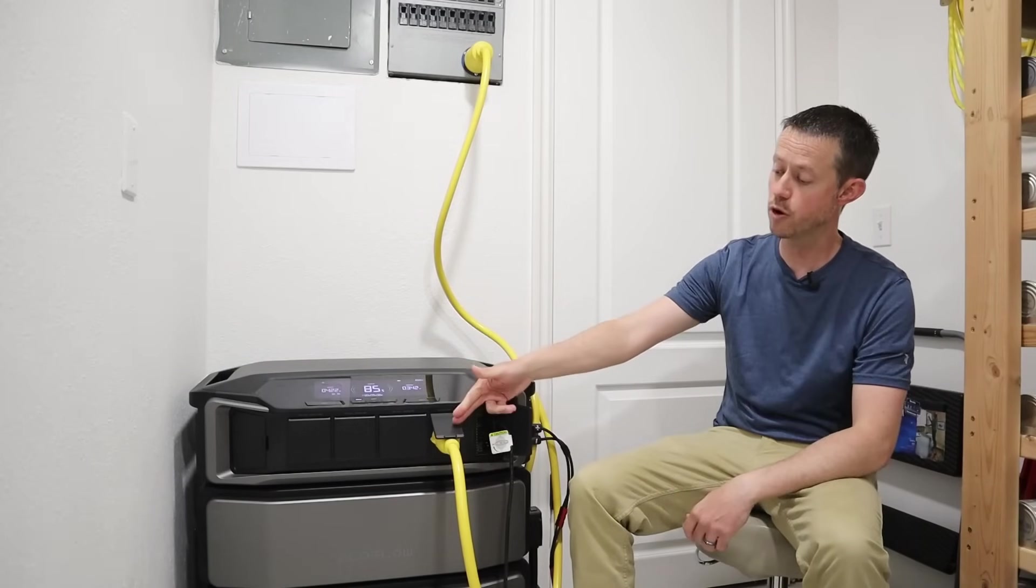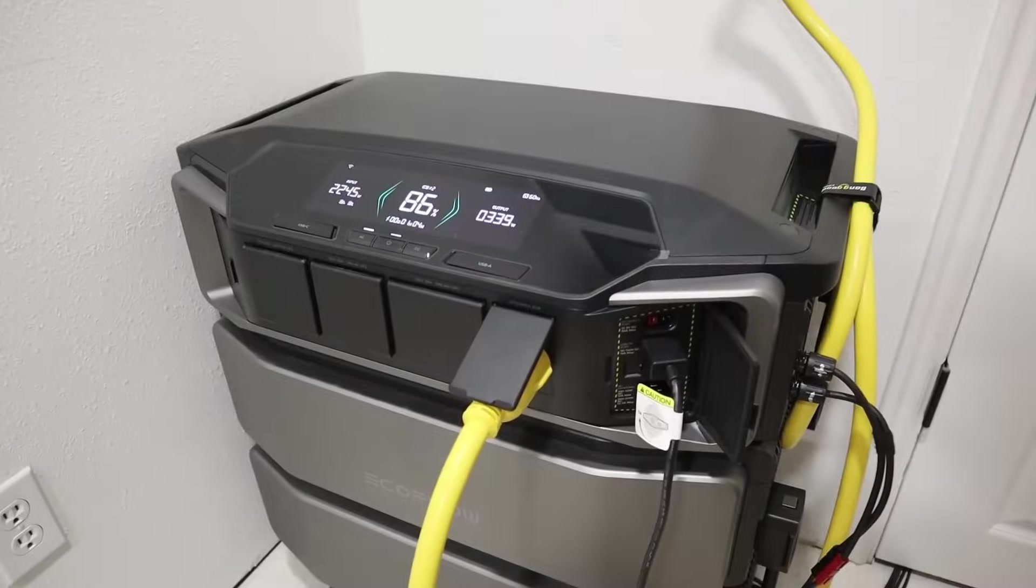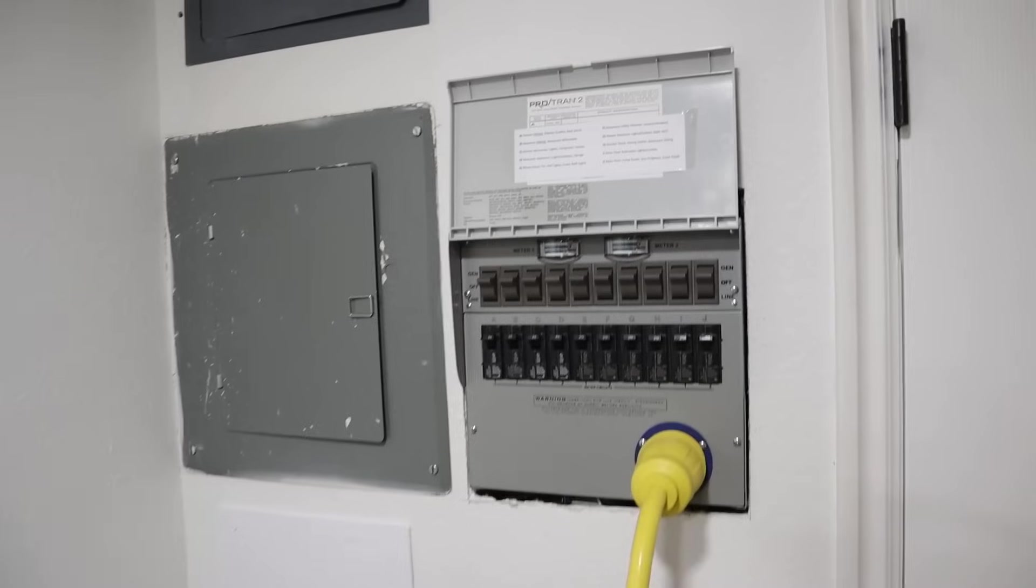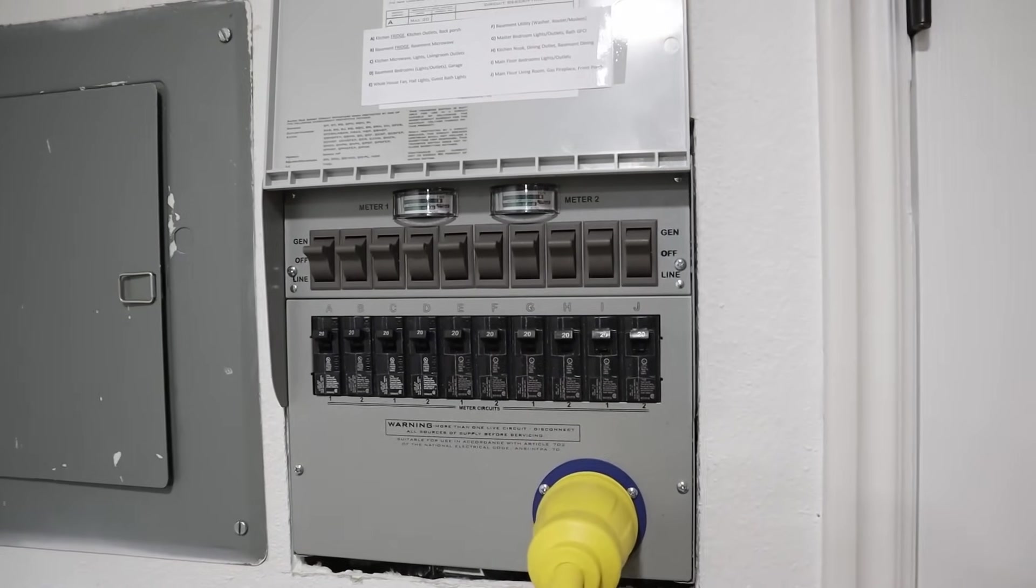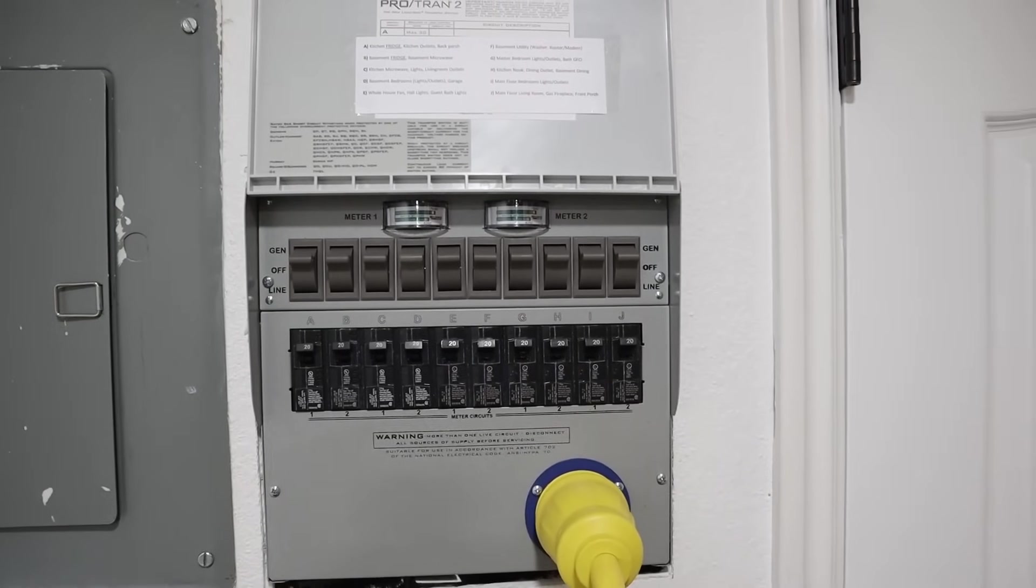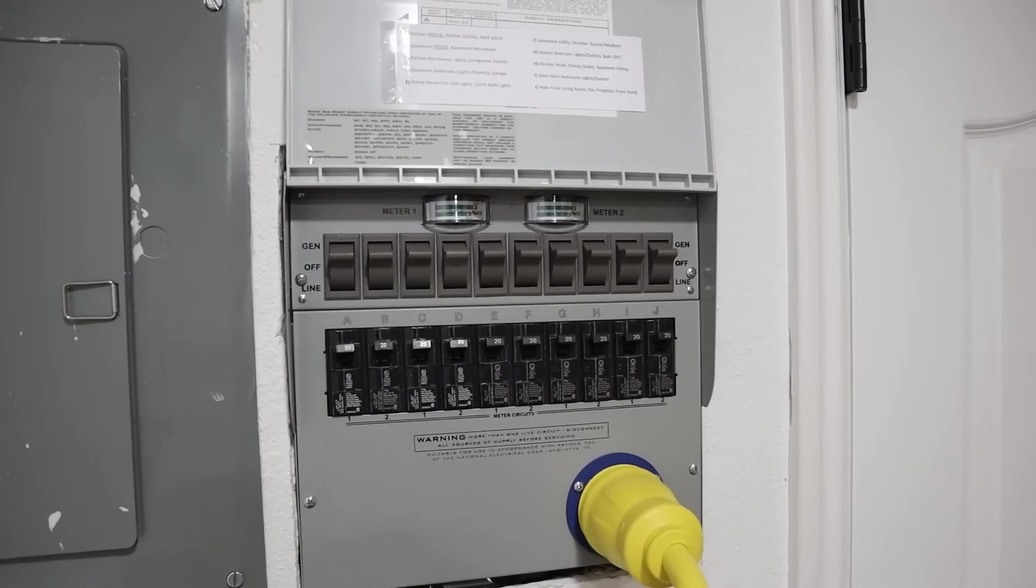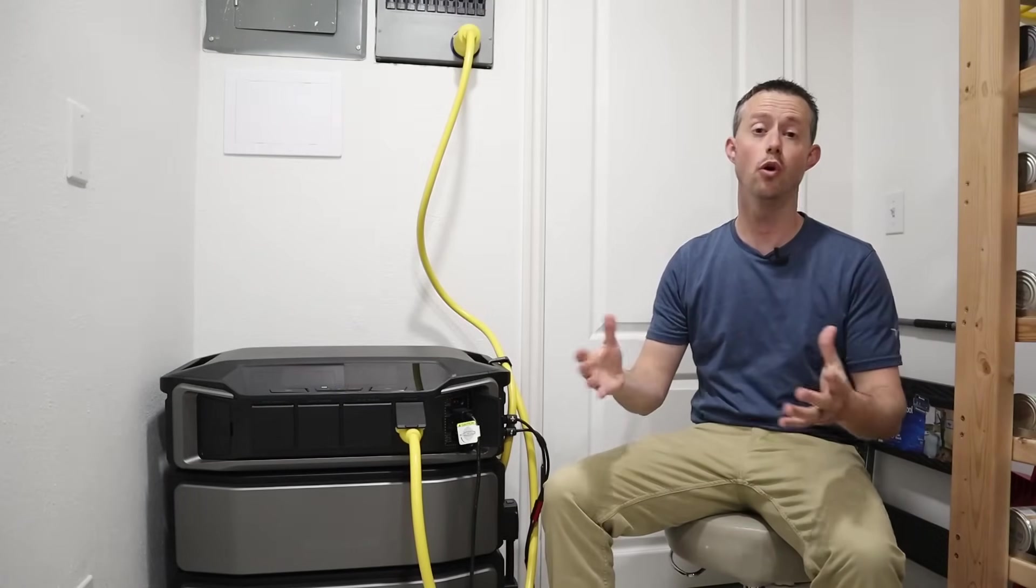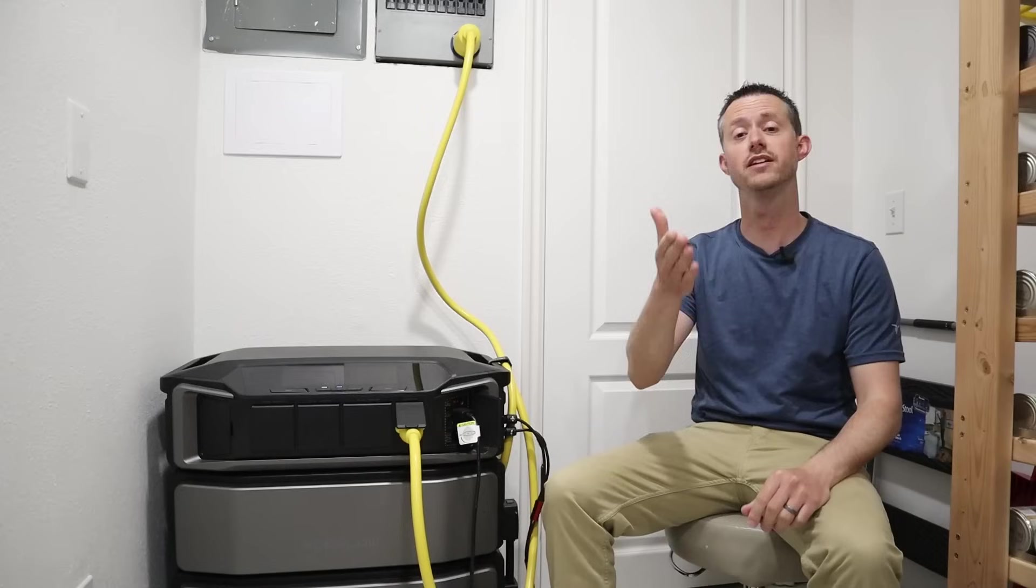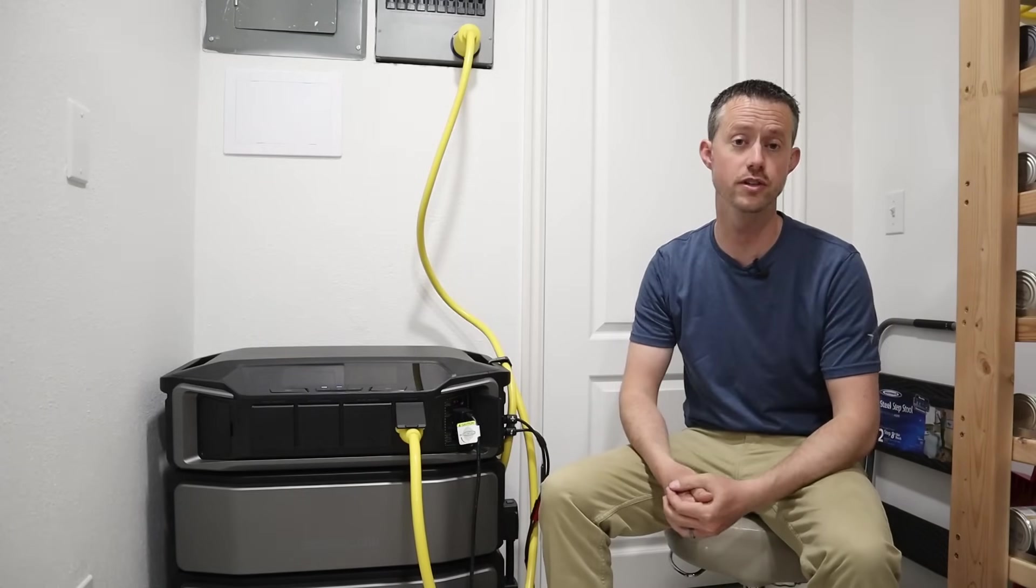I have the 240 volt output connected up to a Reliance Controls transfer switch. This is a 10 circuit, 50 amp, 240 volt transfer switch. This allows me to run critical loads during a power outage or even during the day to offset my electrical bill. It's important to make sure that if you are going to use a transfer switch, you want to select the most important critical loads in your home.